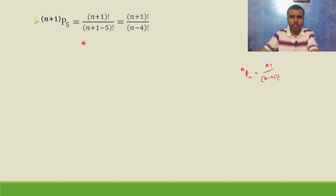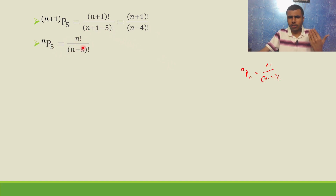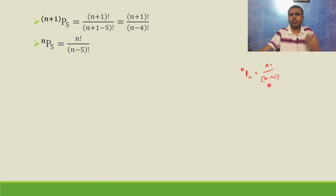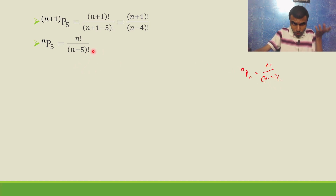nP5 is very easy. nP5 is n factorial by n minus 5 factorial — that is n factorial by n minus r factorial.